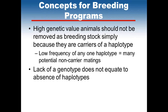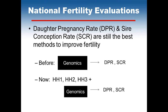What concepts do we need to be concerned about for a breeding program? It's important to recognize that high genetic animals should not be removed as breeding stock simply because they're carriers of a haplotype. The frequency of any one of these haplotypes is relatively low, and many potential non-carrier matings are available to take advantage of their outstanding genetic material. Also, the lack of a genotype does not equate to the absence of the haplotype. Daughter pregnancy rate and sperm conception rate are still the best methods to improve fertility.